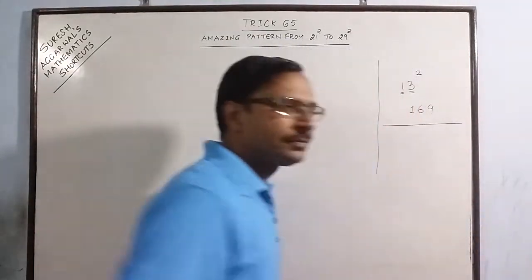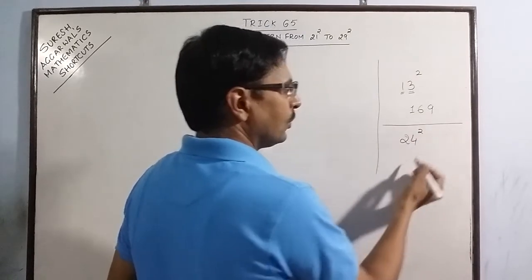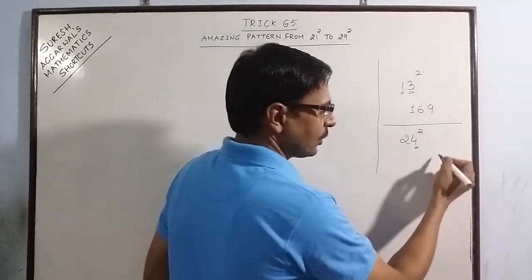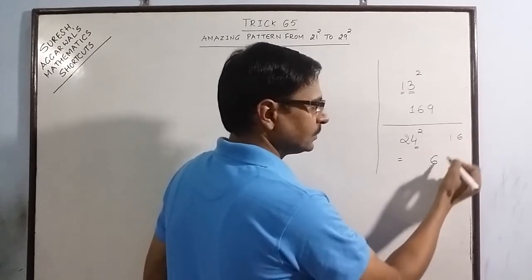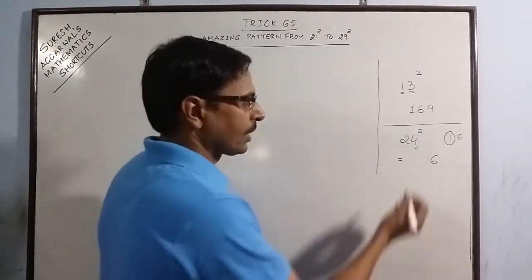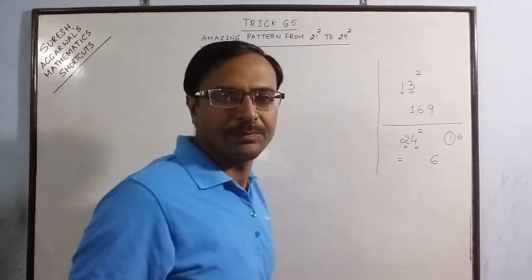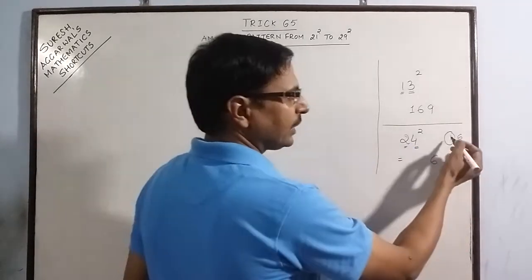Let us take one more example. Say we have 24. 4 square is 16. For 16 we retain 6. Now remember 1 is carried forward. The product of the two numbers 4 into 2 is 8. Double the product 16. Carry 1. 17.